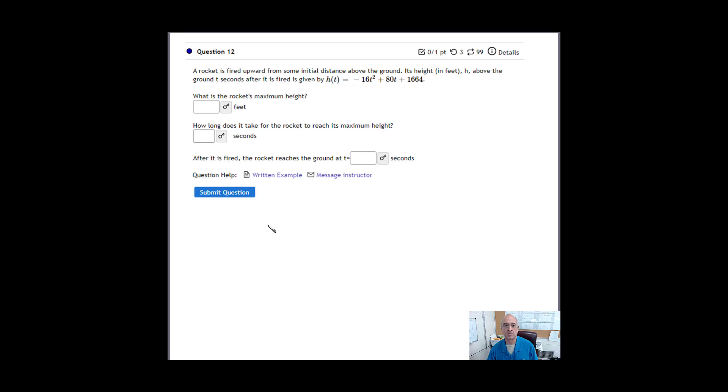Alright class, so let's look at this problem here. This is problem number 12 from section 5.1. It says a rocket's fired upward at some initial distance above the ground, its height in feet given by h of t equals negative 16t squared plus 80t plus 1664.